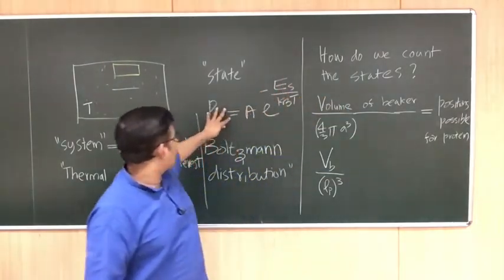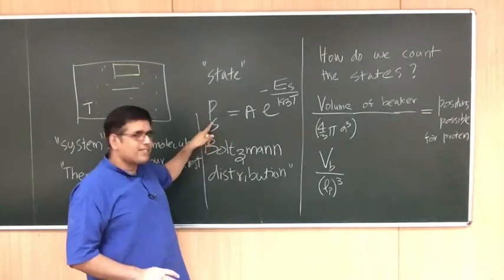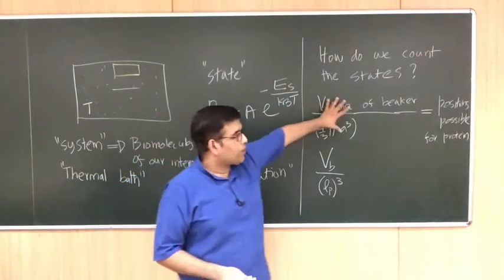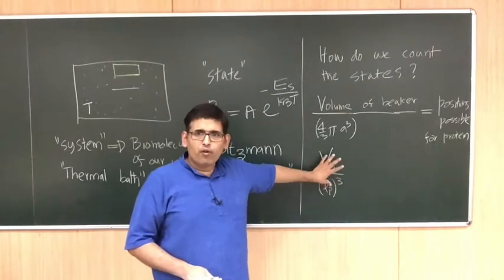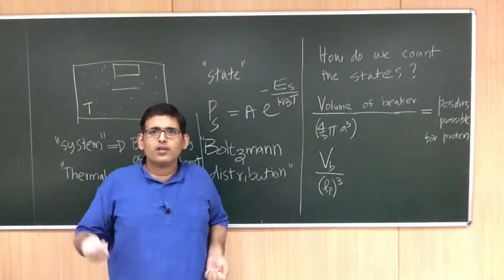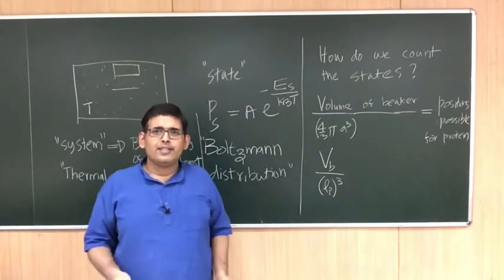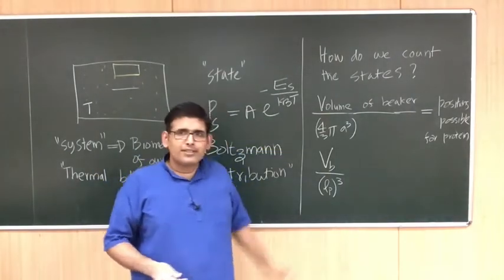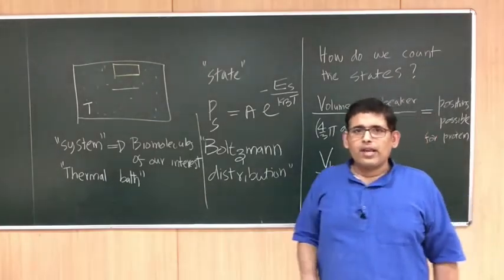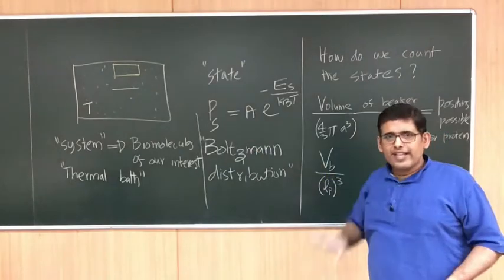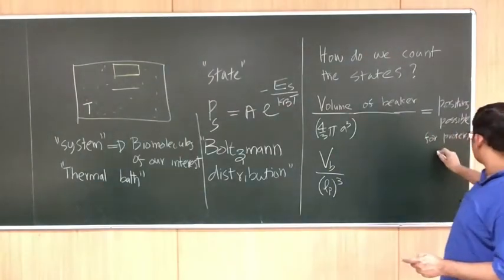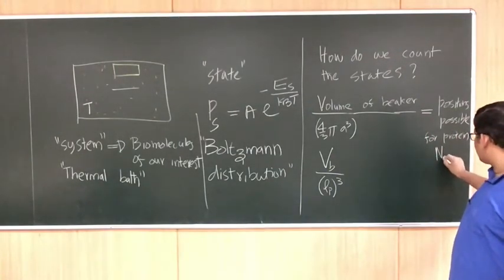Ideally, one has to sum over all possible states. For the practical purpose of computing quantities accurately, one has to compute at least the volume divided by the protein volume worth of states, and ideally the volume divided by the Planck length cubed. That defines the number of states — the number of states is proportional to the volume of the beaker. So I have N_s possible states: p1, p2, p3, p4, up to N_s.